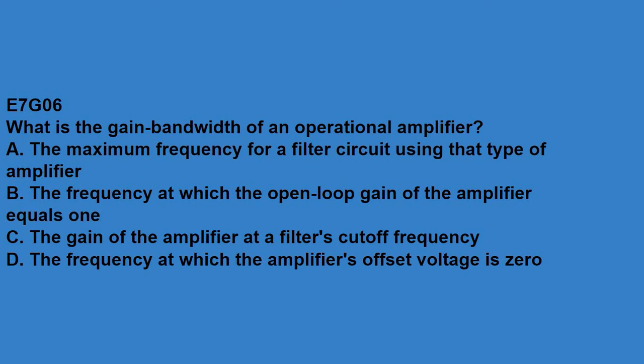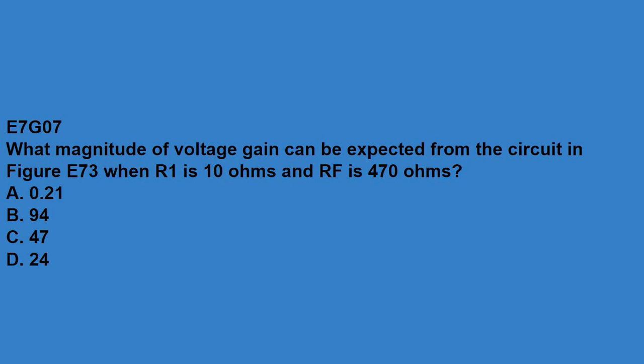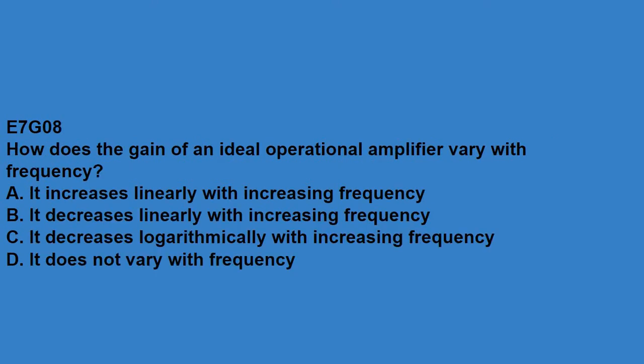E7G06, what is the gain bandwidth of an operational amplifier? The frequency at which the open-loop gain of the amplifier equals one. E7G07, what magnitude of voltage gain can be expected from the circuit in figure E7-3 when R1 is 10 ohms and RF is 470 ohms? That answer is 47. E7G08, how does the gain of an ideal operational amplifier vary with frequency? It does not vary with frequency.